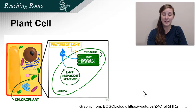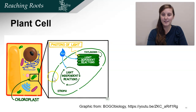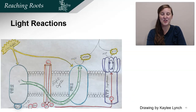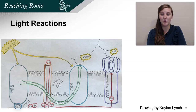Now that we know what concentration gradients are and how molecules like to move from high concentration to low concentration, we're going to get into the specific steps of the light reactions. It's occurring within the plant cell, in the chloroplast — inside there's the stroma and then there's the thylakoids. We're zooming into this green line to see this membrane. There are a lot of steps, so we're going to use this diagram that was drawn by Kaylee Lynch, a former horticulture student. You'll want to make a similar one in your own notes as we go through this process.